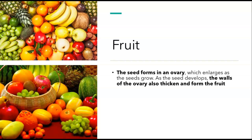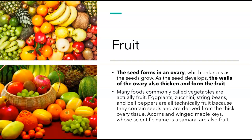Now, what about fruit? The seed eventually forms in an ovary, and it enlarges as the seed grows. As the seed develops, the walls of the ovary also thicken and form the fruit. Many foods that are commonly called vegetables are actually fruit — eggplants, zucchini, string beans, bell peppers. The classic one is tomatoes. You would commonly think of these as vegetables, but they're actually fruit because they contain seeds and are derived from thick ovary tissue. Acorns and winged maple keys, whose scientific name is a samara, are also fruits. I don't recommend putting them in your fruit salads, but they are actually fruits.